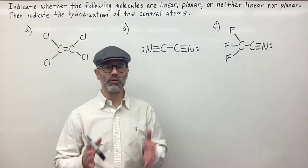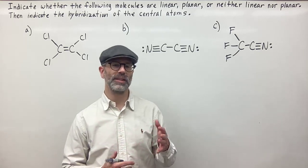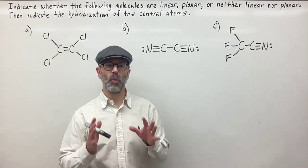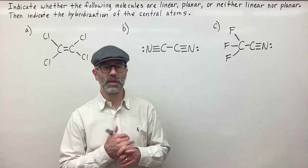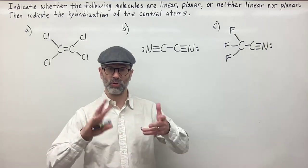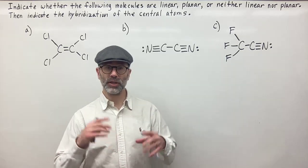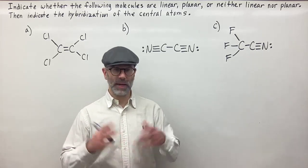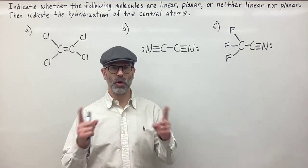To figure out whether a molecule is going to be planar, linear, or some other shape, you have to figure out what the bonds are like. You have to figure out: do we have sigma bonds or pi bonds? Is there going to be rotation around the axis where the atoms are bonded together? That's going to depend on whether or not you have pi bonds between those two atoms.